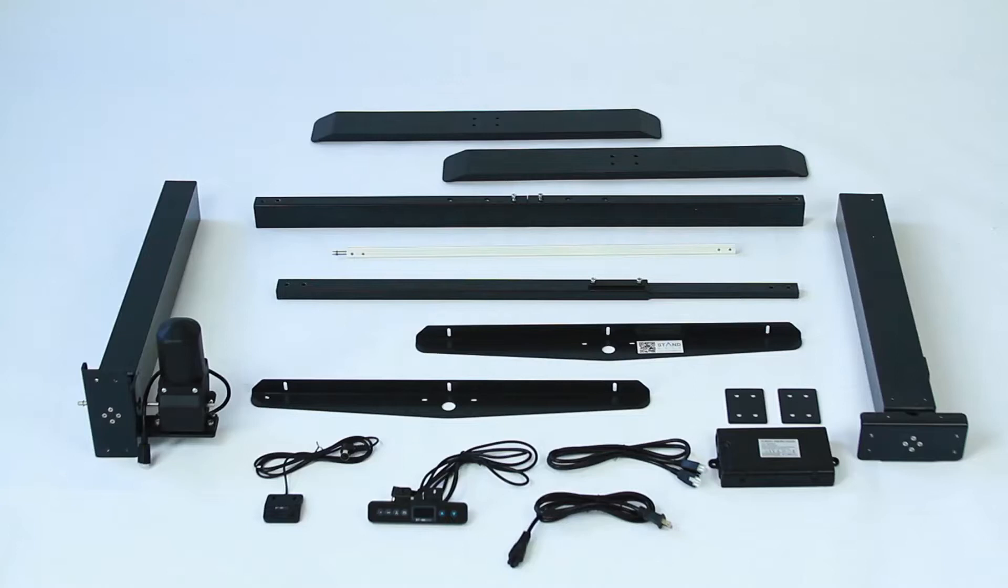Now let's get familiar with all the pieces. You should have one leg with motor, one leg without motor, one front slat, one back slat, one drive shaft, one outer rod, two support braces, two feet, two stabilizing foot plates, one control box, one handset, one data cord, and one power cord.